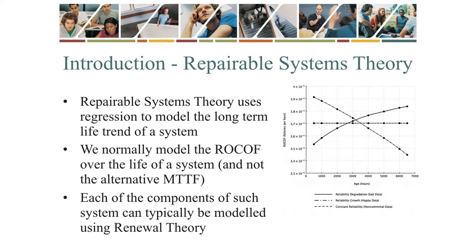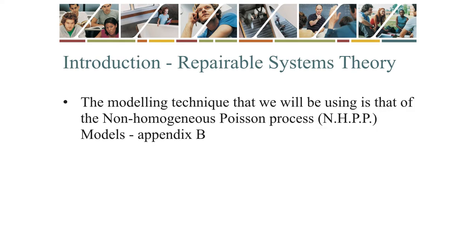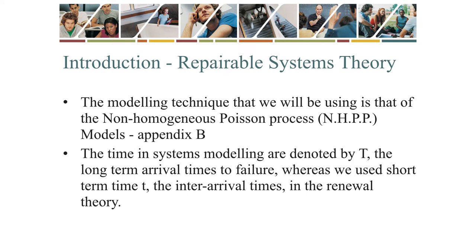Naturally, such a system consists of many — sometimes thousands — of components. The maintenance of these components can be optimized using the renewal theory. We will be using non-homogeneous Poisson modeling for the modeling of repairable systems. We use an uppercase T in repairable systems, whereas we used a lowercase t for components. This is simply to discern between the two.